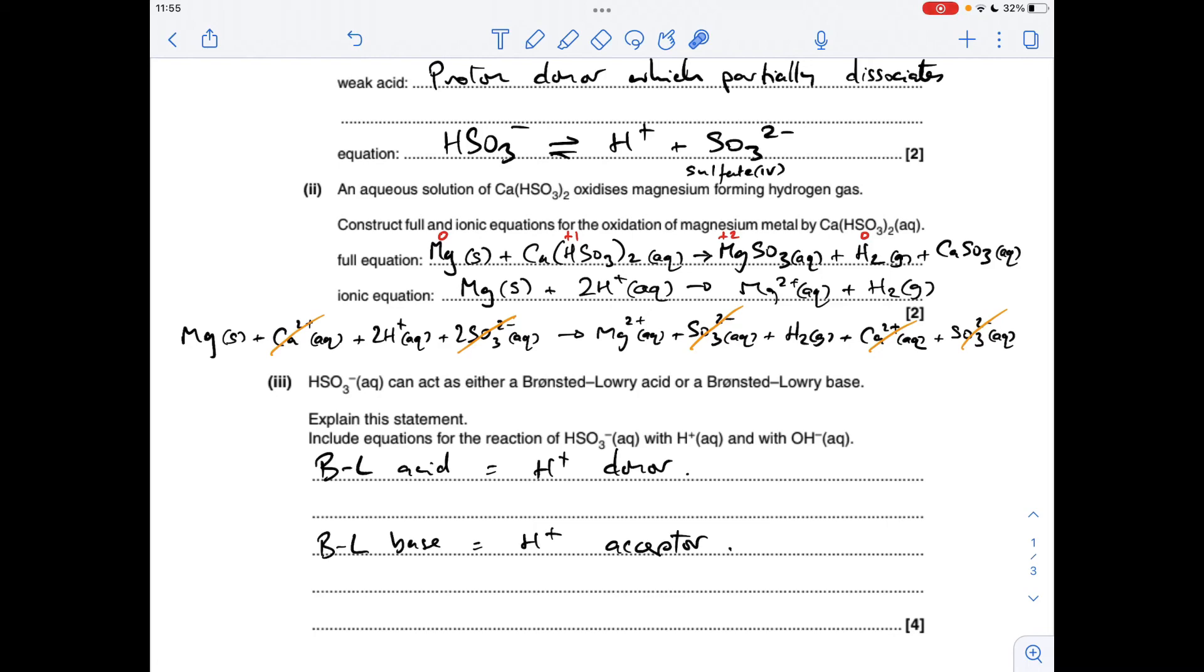And the last part, we've got to explain why this HSO3- ion can either act as a Bronsted-Lowry acid or base. So I've got the definitions in. First of all, Bronsted-Lowry acid is an H+ donor or a proton donor. Bronsted-Lowry base is an H+ or proton acceptor. So in terms of equations now, to show the Bronsted-Lowry acid nature of this acid, so we're showing that this is donating a proton to the hydroxide ion, because we've got to talk about the reactions with hydroxide ions and H+ ions. So donate an H+ ion to the hydroxide ion, that will form a water molecule, and you're left with this sulfate 4 ion. And the easiest way to explain it, being a Bronsted-Lowry base, we're just going to react the HSO3- ion with an H+ ion to form H2SO3.